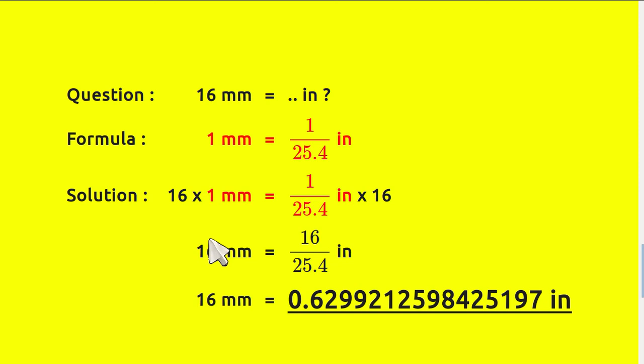16 times 1 equals 16. Times 1 divided by 25.4 equals 16 divided by 25.4 inches. And 16 millimeters equals... let's divide this and it equals 0.6299 inches. And that's all of it. Thank you for watching and bye bye.